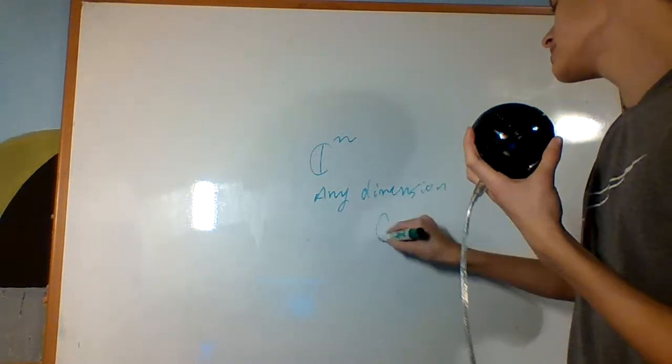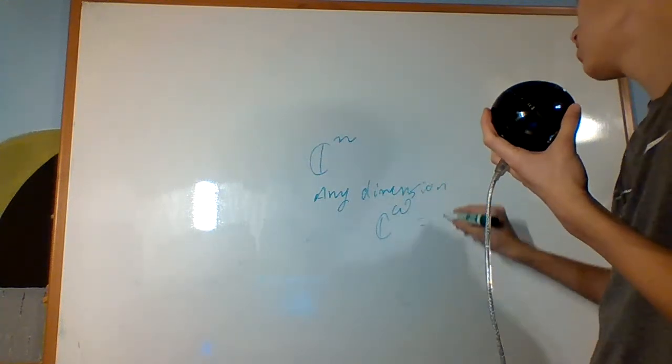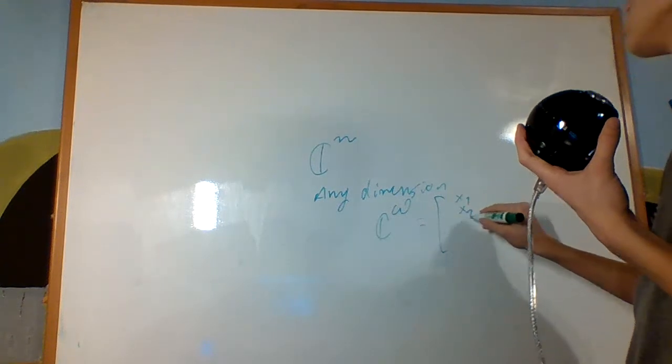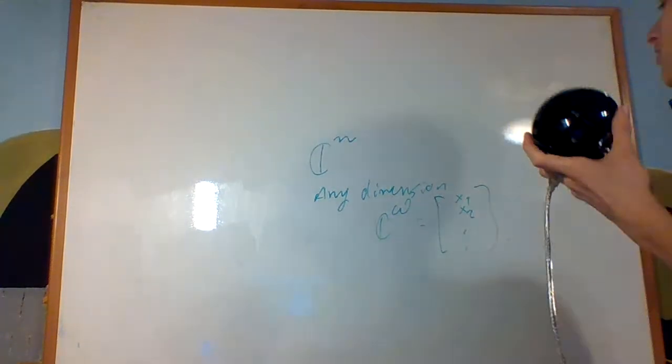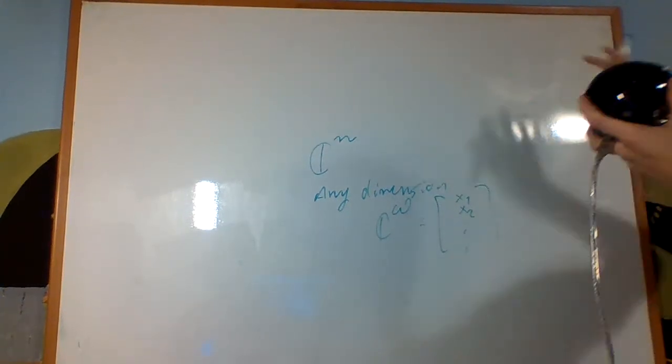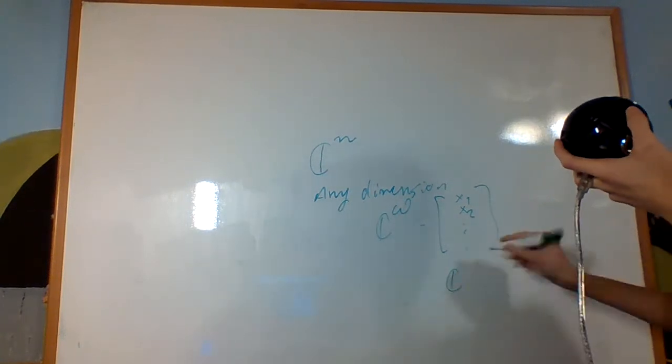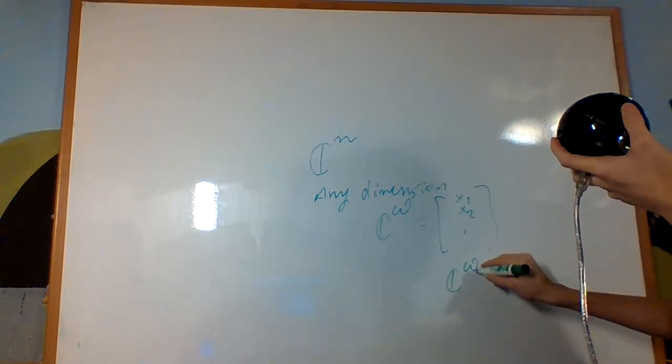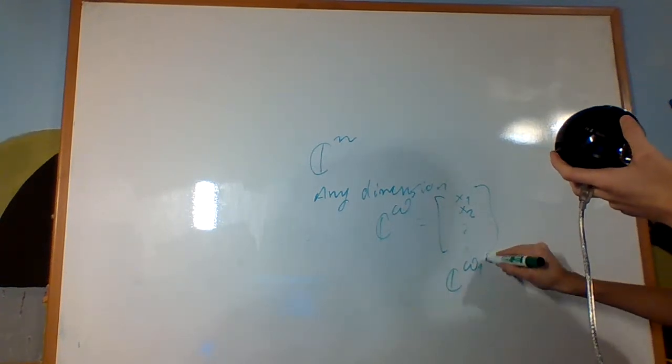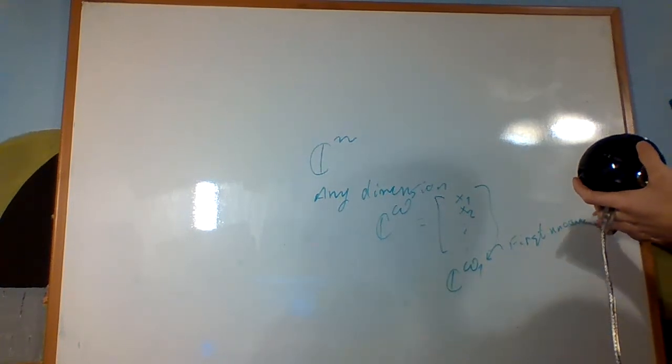Right? And maybe C^Omega, the set of all X1, X2 all the way down to countable infinity, then you add the pointwise addition and all that. It could be C^Omega naught or Omega 1, the first uncountable, first uncountable ordinal.